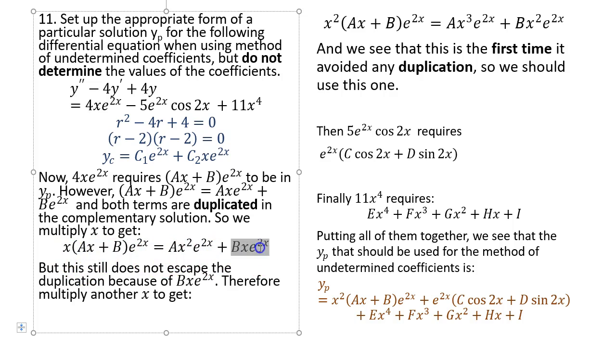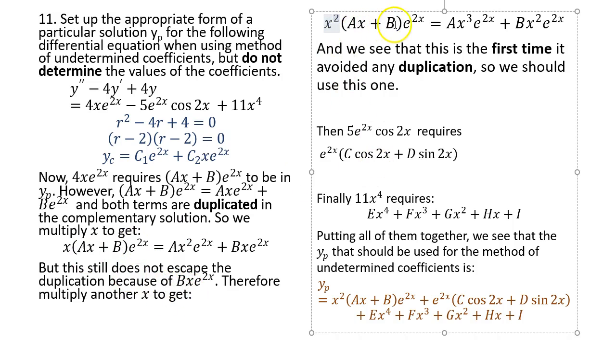So let's see how this thing works. First, we decide that this should be what you need to make this 4x e to the 2x up here on the right. However, because of the duplication, I multiply by x. But still, we see a duplication here - it's x times e to the 2x, right? That's duplicated here. So they are duplicated. Therefore, we have to multiply another x. So it should be x squared times ax plus b, e to the 2x. And that's the first time it escapes being duplicated. So that should be the one that you have to multiply. You can't go further. You can't do x cubed. That will be another no-no. So you have to multiply by x just the right amount.